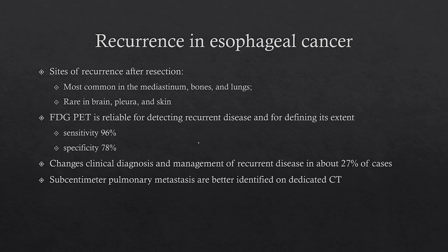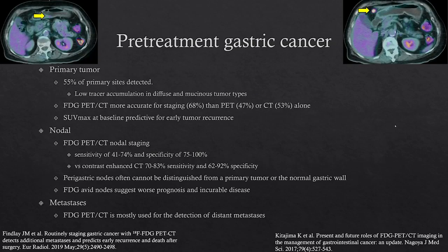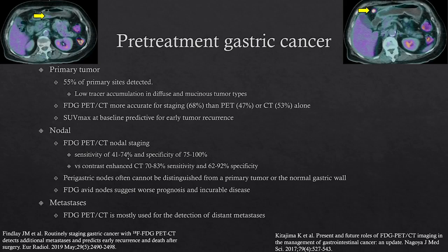For pre-treatment imaging of gastric cancer, FDG detects about 55% of primary sites. Those unlikely to be detected include diffuse gastric cancer of the wall and mucinous type gastric cancer. FDG is reported as more accurate for staging at about 68% compared to PET alone or CT alone. The SUV max at baseline is predictive for tumor recurrence. For nodal staging, PET-CT has a reported sensitivity of 41% to 74% — less sensitive than CT — and specificity of 75% to 100%, more specific than CT. Perigastric nodes often cannot be distinguished from the primary tumor or normal gastric wall.